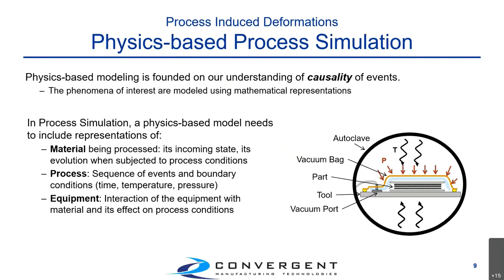In order to bring manufacturing risk to an acceptable level all the way up to fully assembled structures, process simulation provides an effective tool to help reduce this risk and have it be evenly distributed and manageable throughout your entire manufacturing. In our approach to process simulation, we do things physics-based, which means our modeling is grounded on the understanding of the causality of events — for everything that happens during manufacturing, we have a mathematical representation capable of describing the physical process.